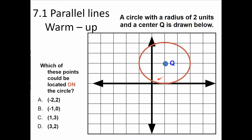(-1, 0): starting at (0,0), go back 1 and up nowhere — that does not hit the circle either. (1, 3): start at (0,0), go over 1 on the x, up 3 — that's within the circle but not on the edge, so C is not the answer. D: (3, 2) — start at the origin, over 3 on the x, up 2 on the y — that puts it right at the edge. D is my answer.